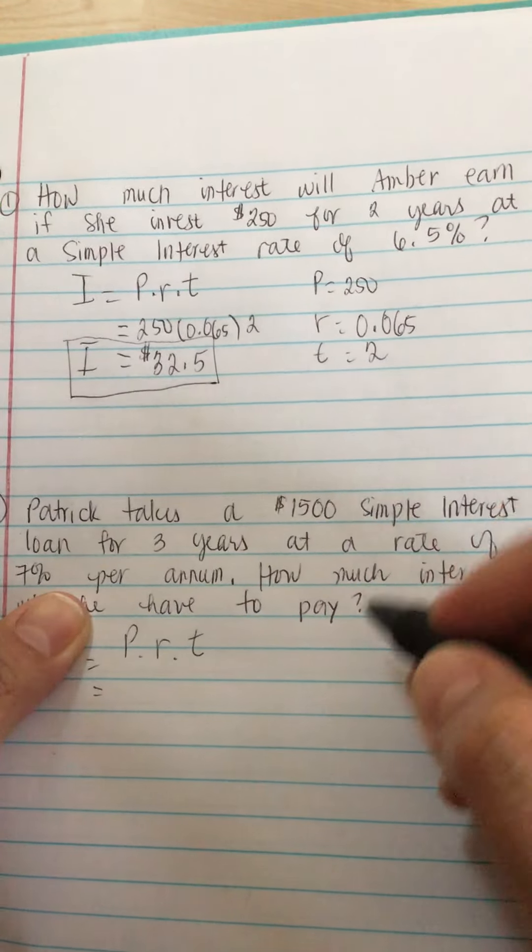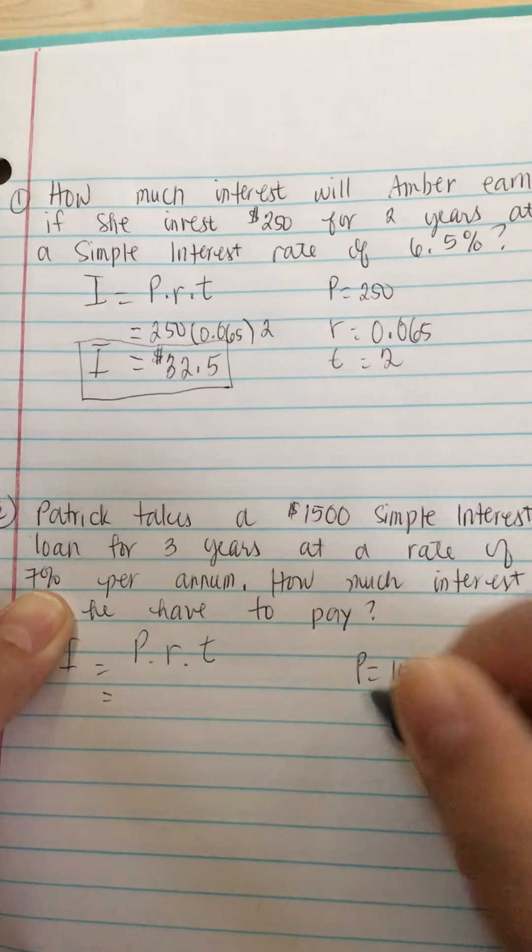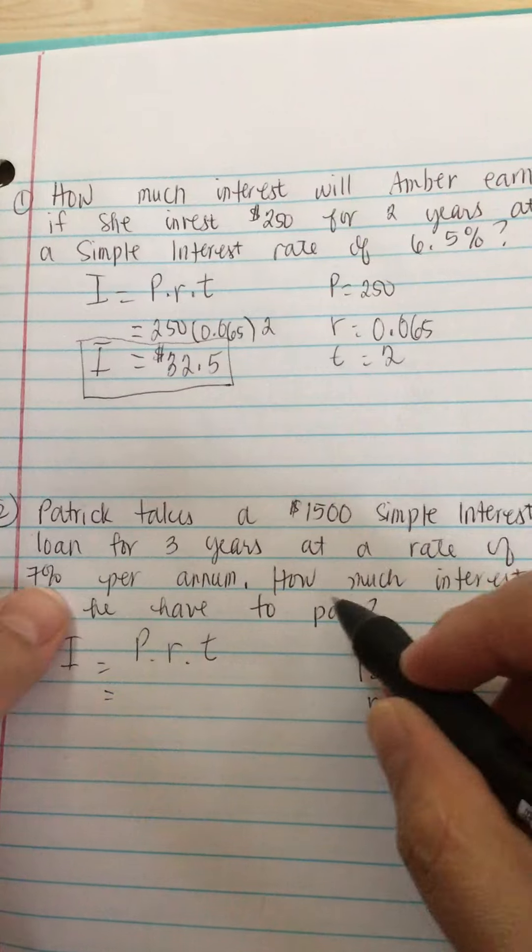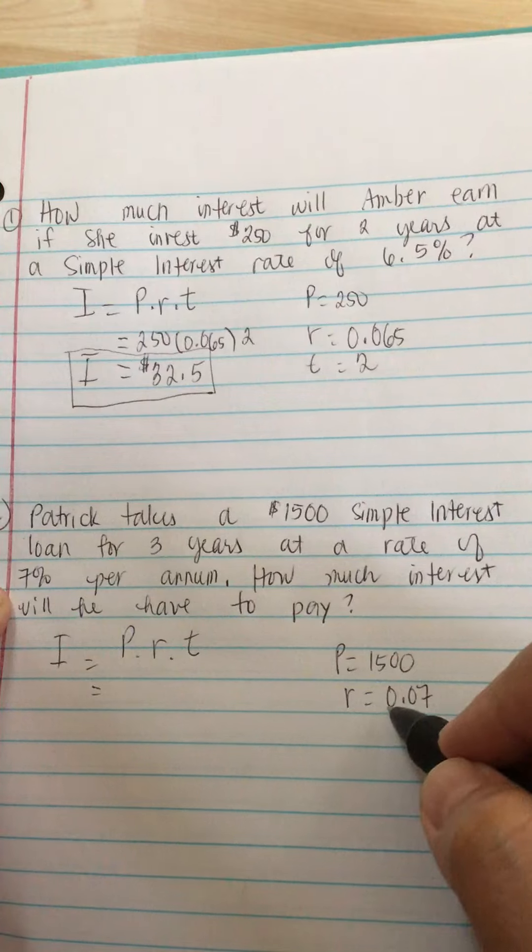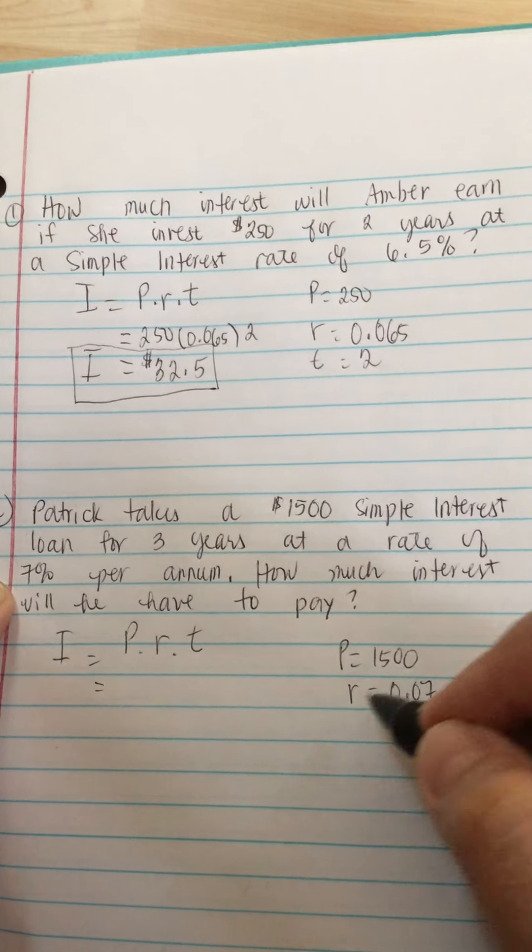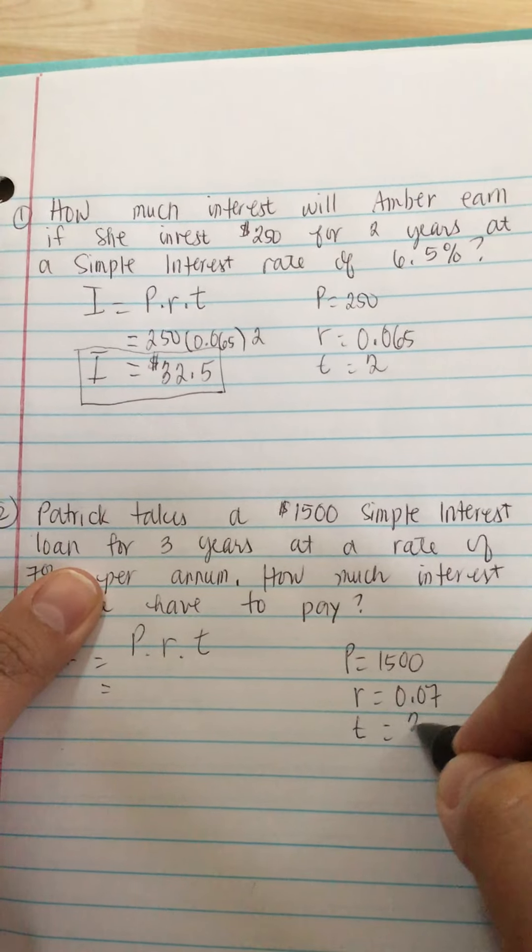So P is equal to $1,500. And R is equal to 7% or 0.07. You always have to change R into a decimal. And T is equal to 3.